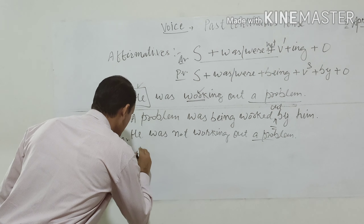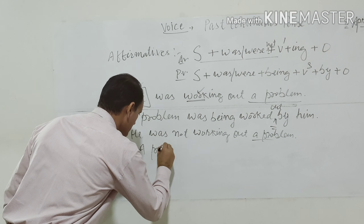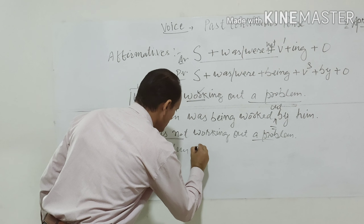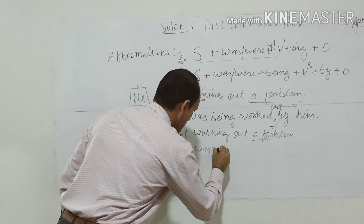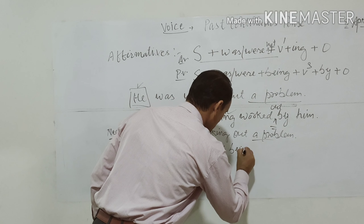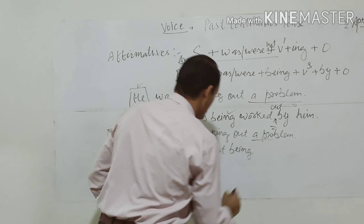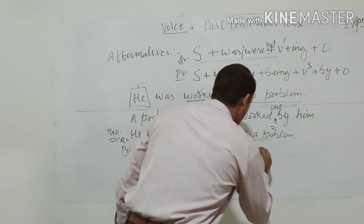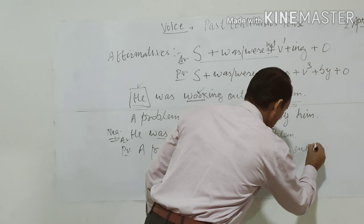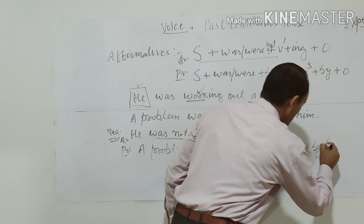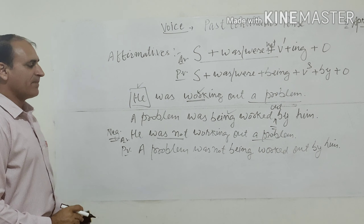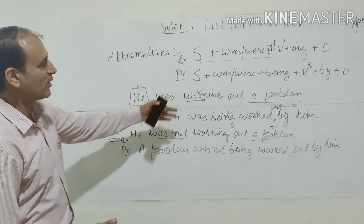The negative passive becomes: 'A problem was not being worked out by him.' The 'not' is placed after the helping verb 'was', then 'being', then the third form 'worked out', then 'by him'.